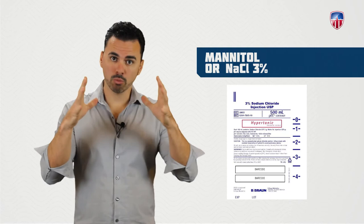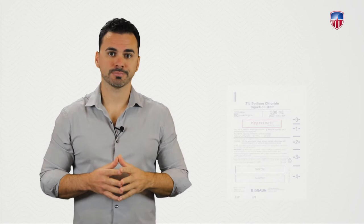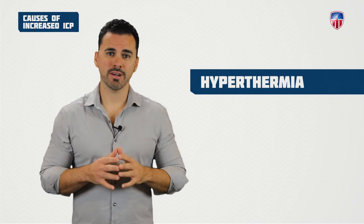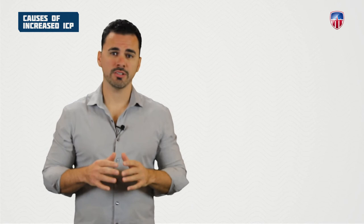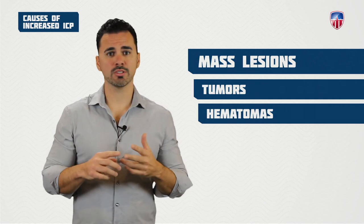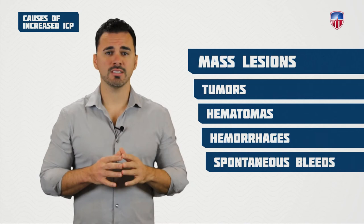Hyperthermia also increases intracranial pressure by raising the brain's metabolic rate, increasing oxygen demands and cerebral blood volume. It is essential to keep these patients normothermic. Another cause of increased ICP is mass or space-occupying lesions such as tumors, hematomas, or hemorrhages from traumatic injuries or spontaneous bleeds.